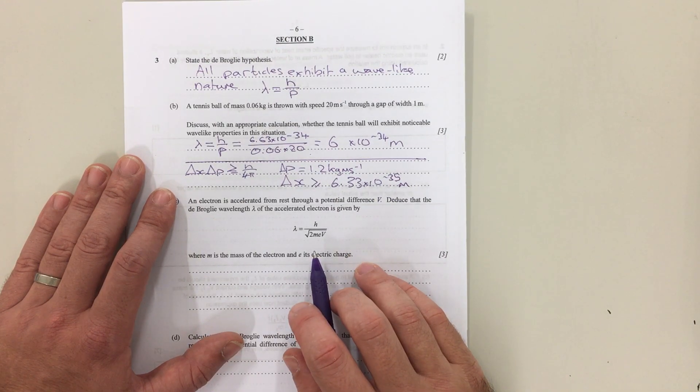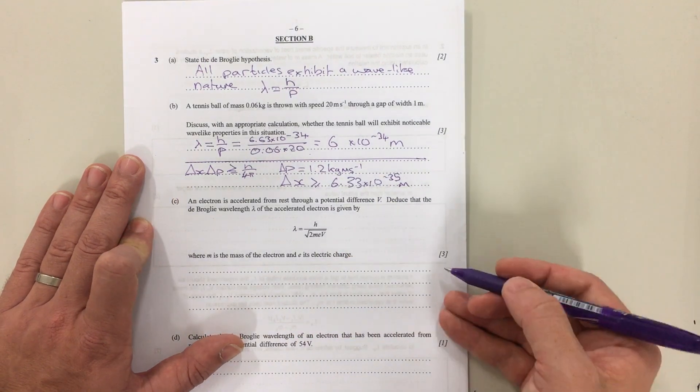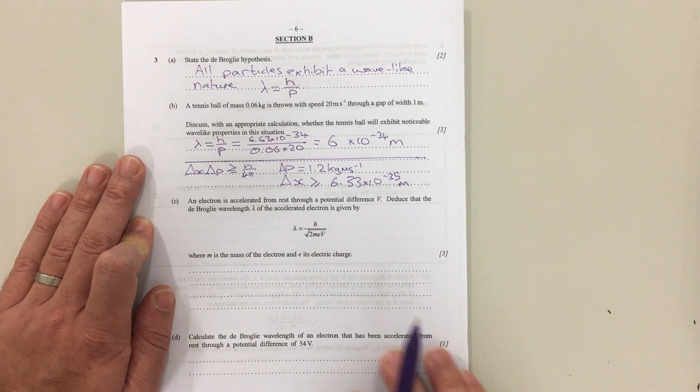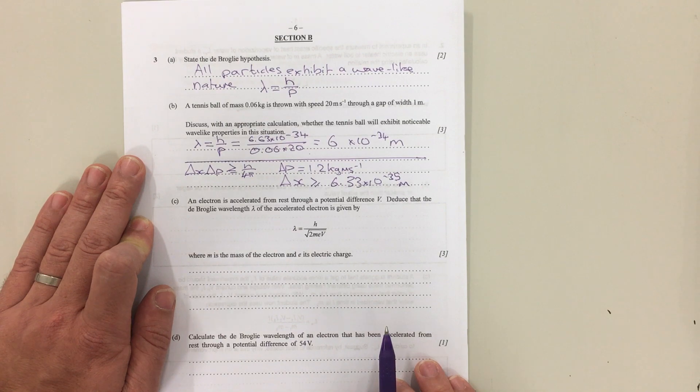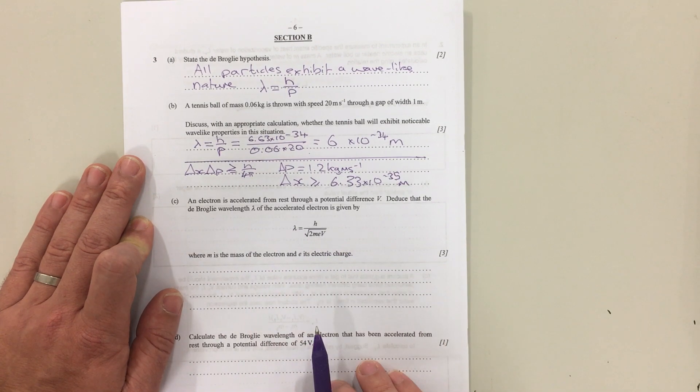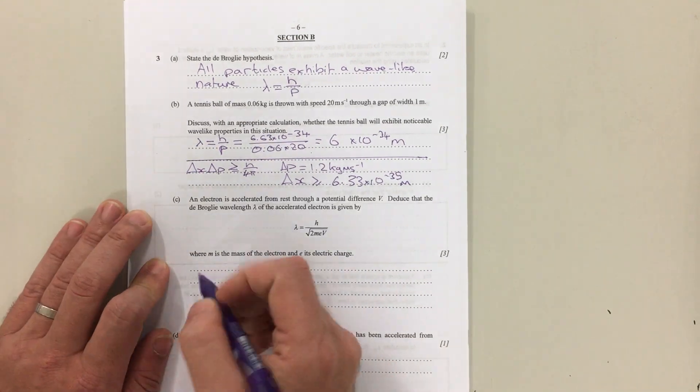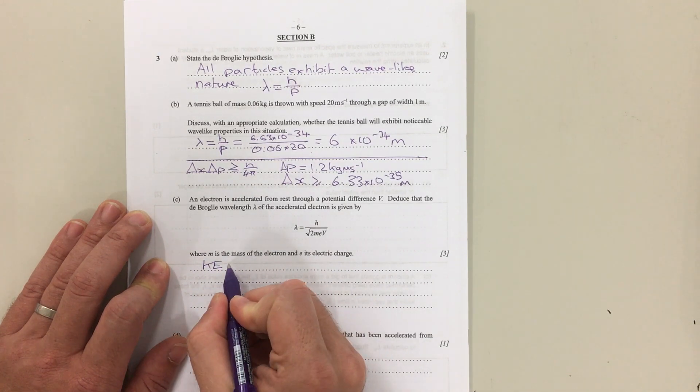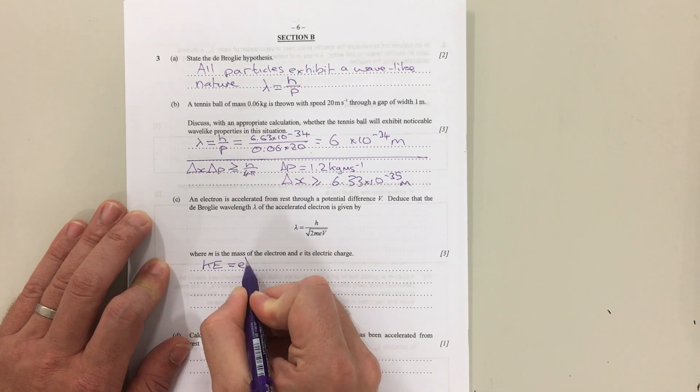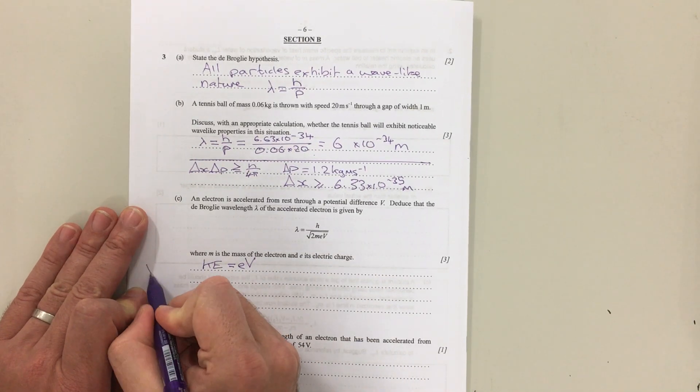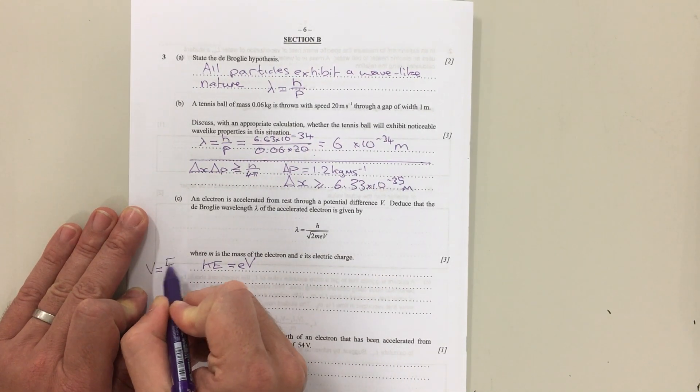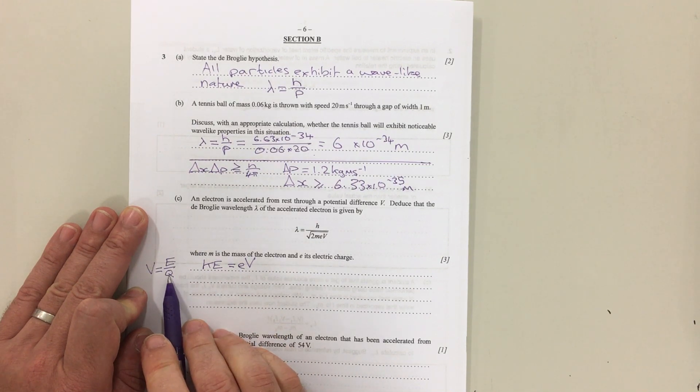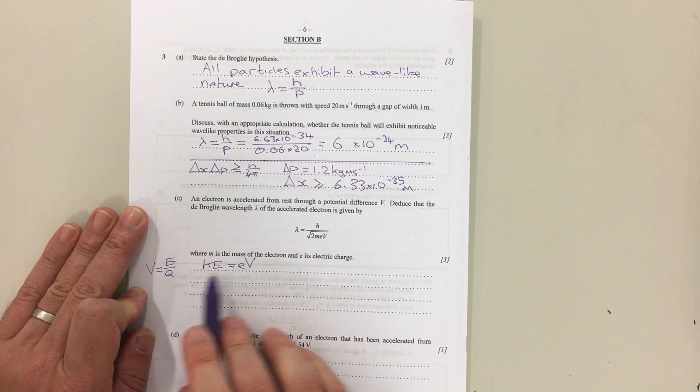For part C, an electron is accelerated from rest through a potential difference V. Deduce that the de Broglie wavelength λ of the accelerated electron is given by this. First of all, we need to know that kinetic energy of the electron is given by the charge on the electron times the voltage. Now that comes from V = E/Q. In this case, the charge on the particle is the charge of an electron, little e.